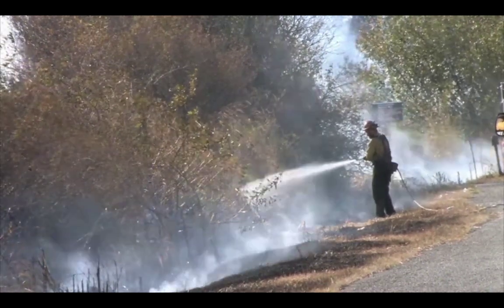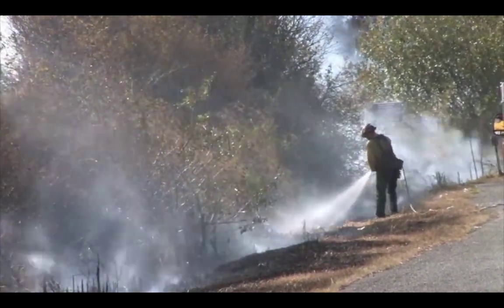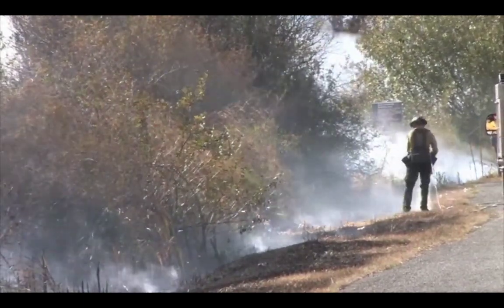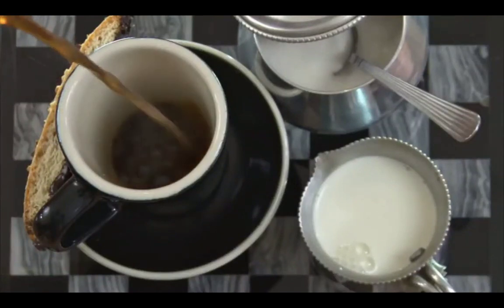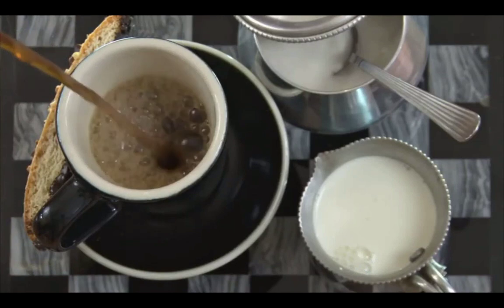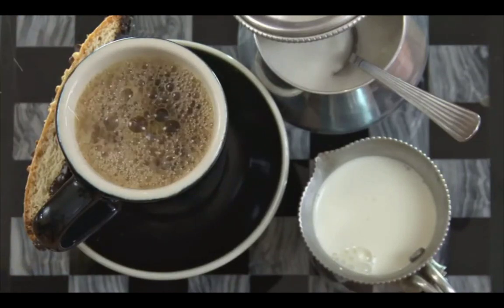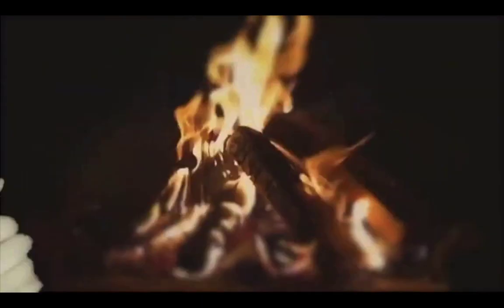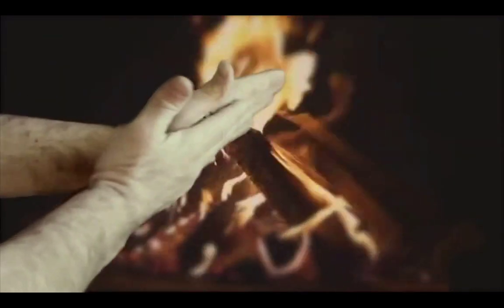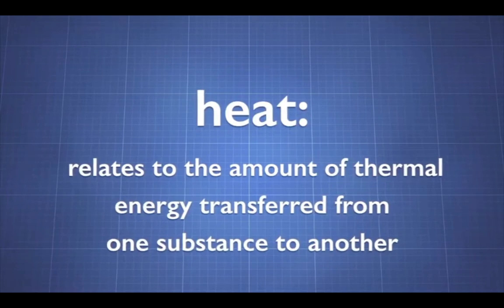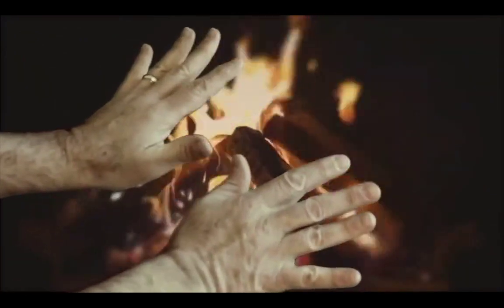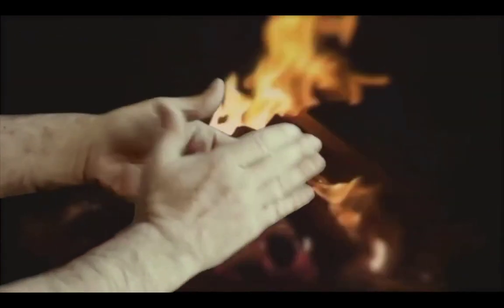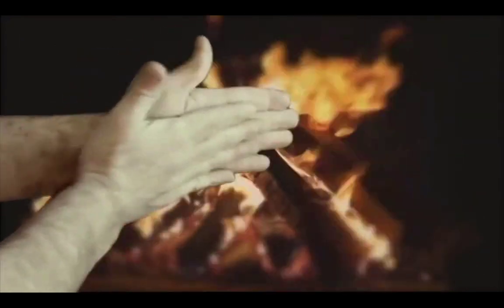Thermal energy is the property of a system — it is the kinetic energy of the particles in that system. We could, for example, talk about the amount of thermal energy in a cup of coffee. When you camp during a cold night, you warm yourself by a fire. Heat relates to the amount of thermal energy transferred from one substance to another. In the case of the campfire, heat is transferred from the fire to the gas in the air and then to your hands. Heat cannot be measured directly, but is detected as changes in temperature. When two bodies at different temperatures are in contact with each other, thermal energy will be transferred from the hottest substance to the cooler substance until the two bodies reach the same temperature — reaching equilibrium.